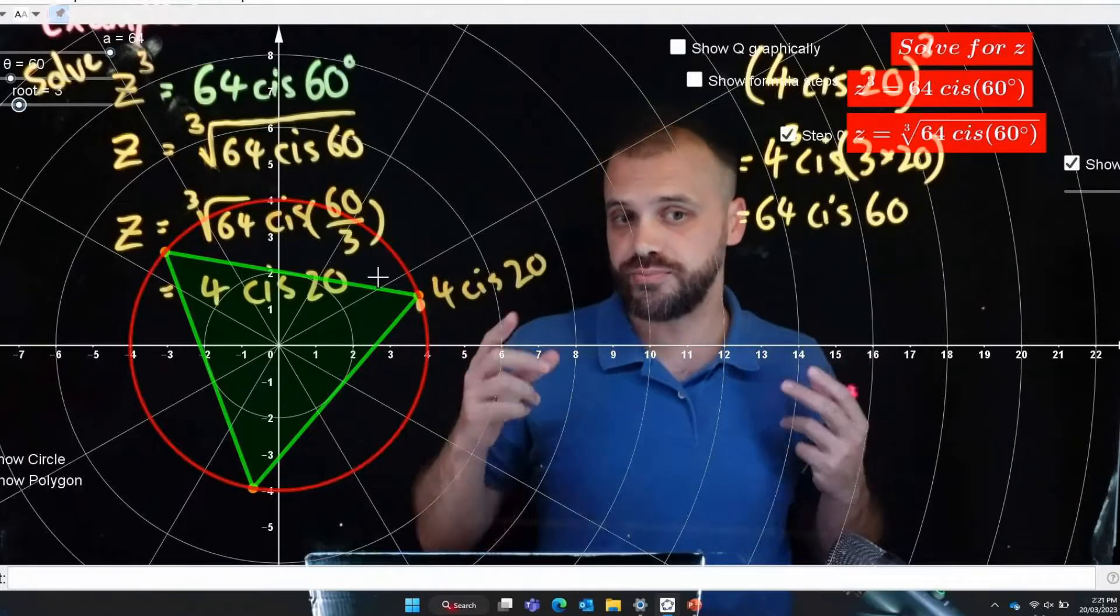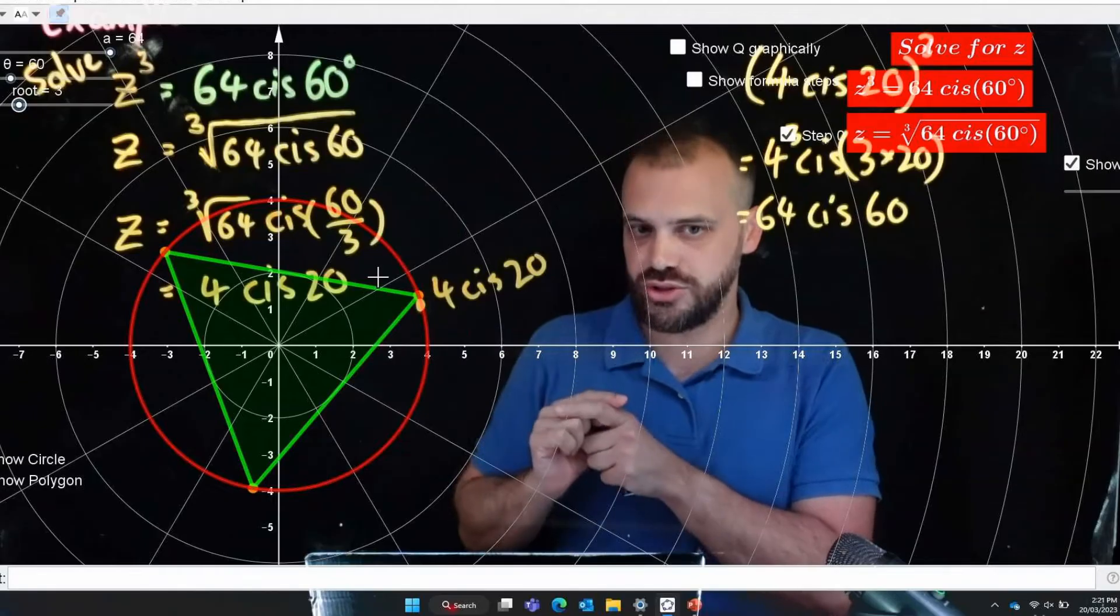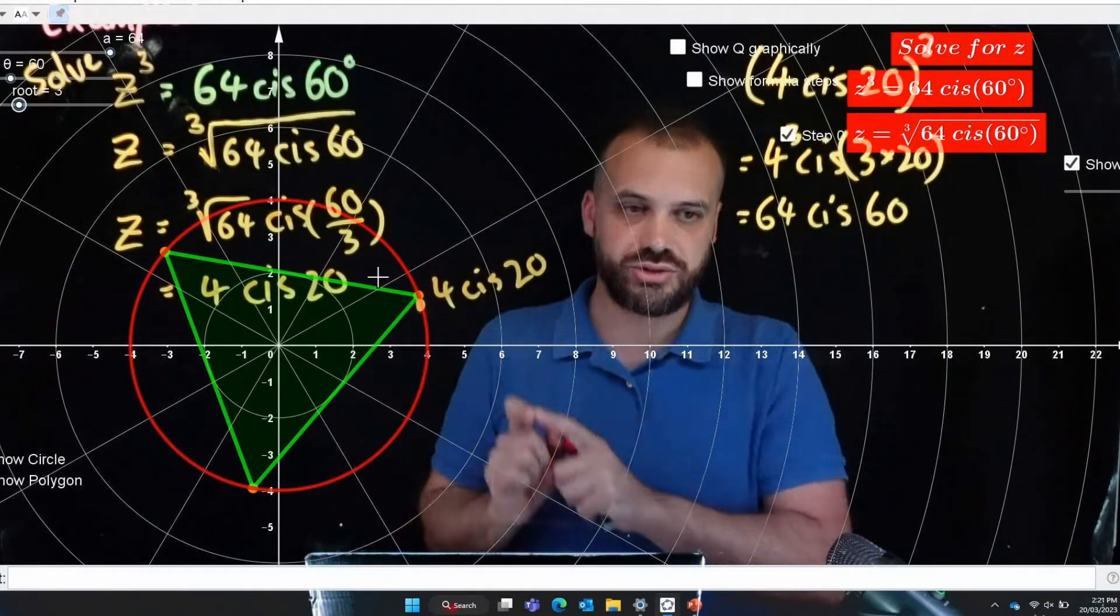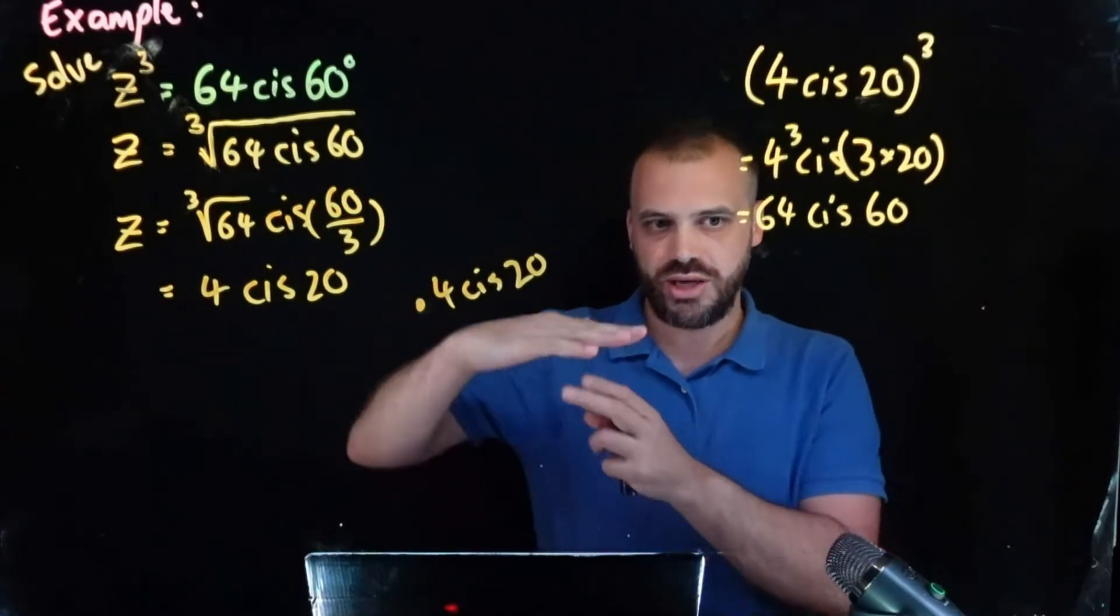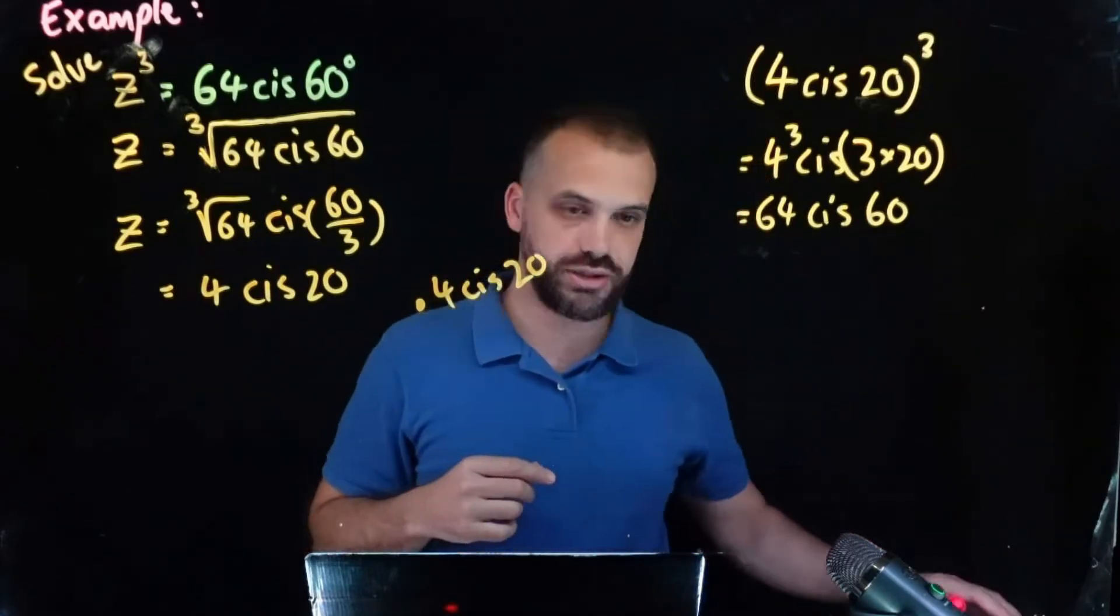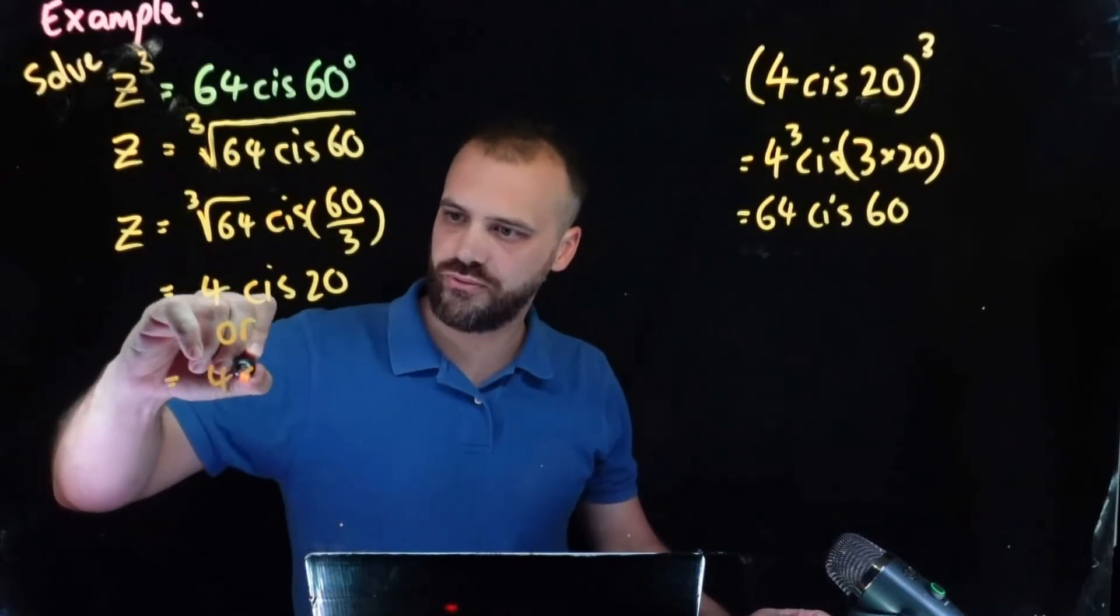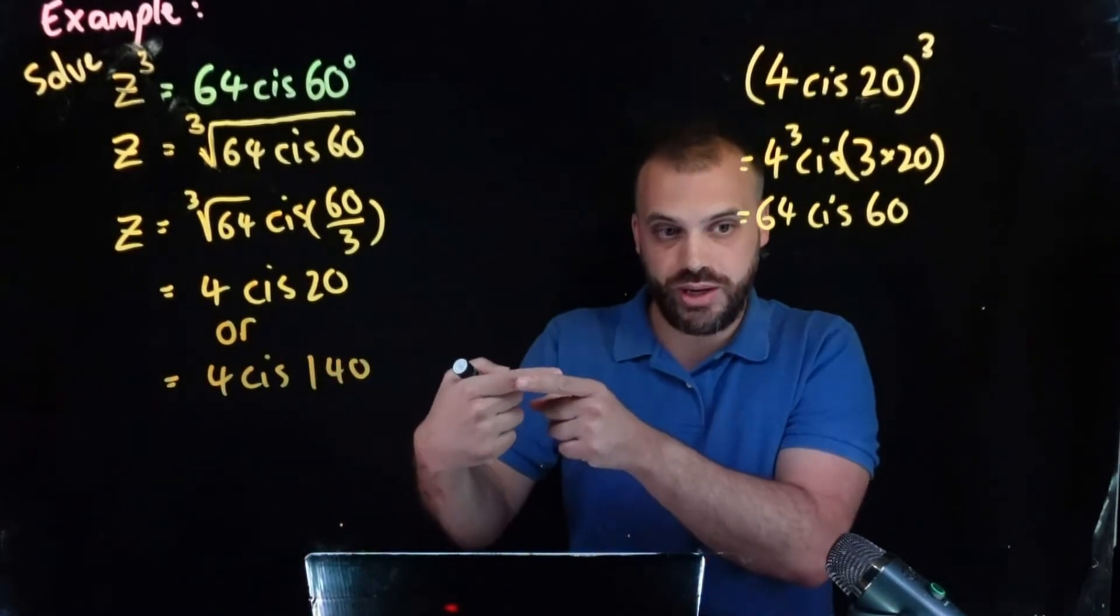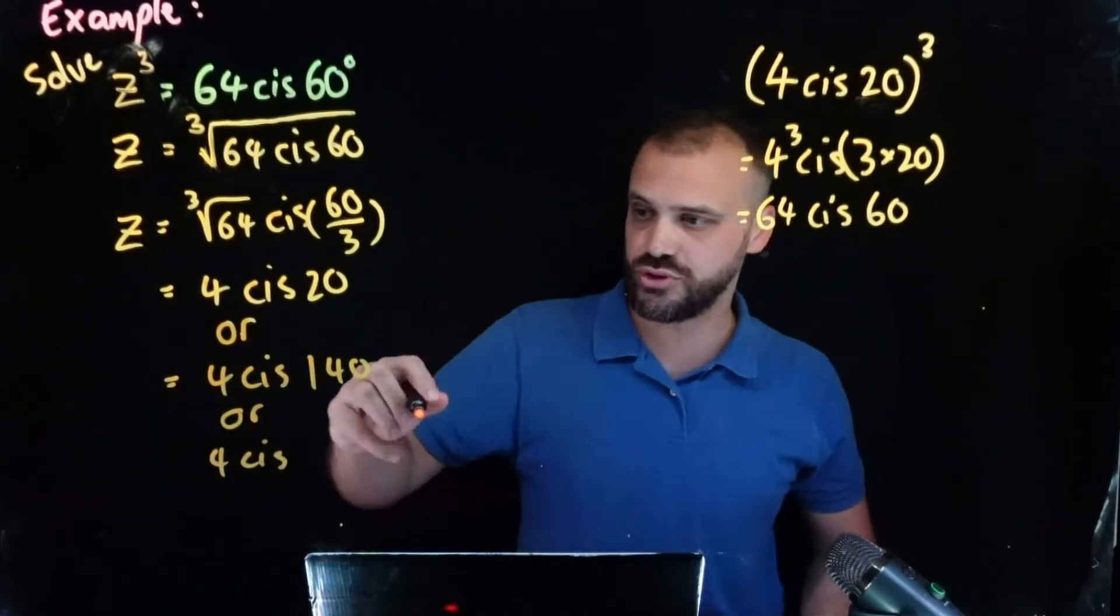Well remember what I said, they are three equally spaced around a circle. So there are 360 degrees in a circle so my other two solutions are going to be 120 degrees apart.